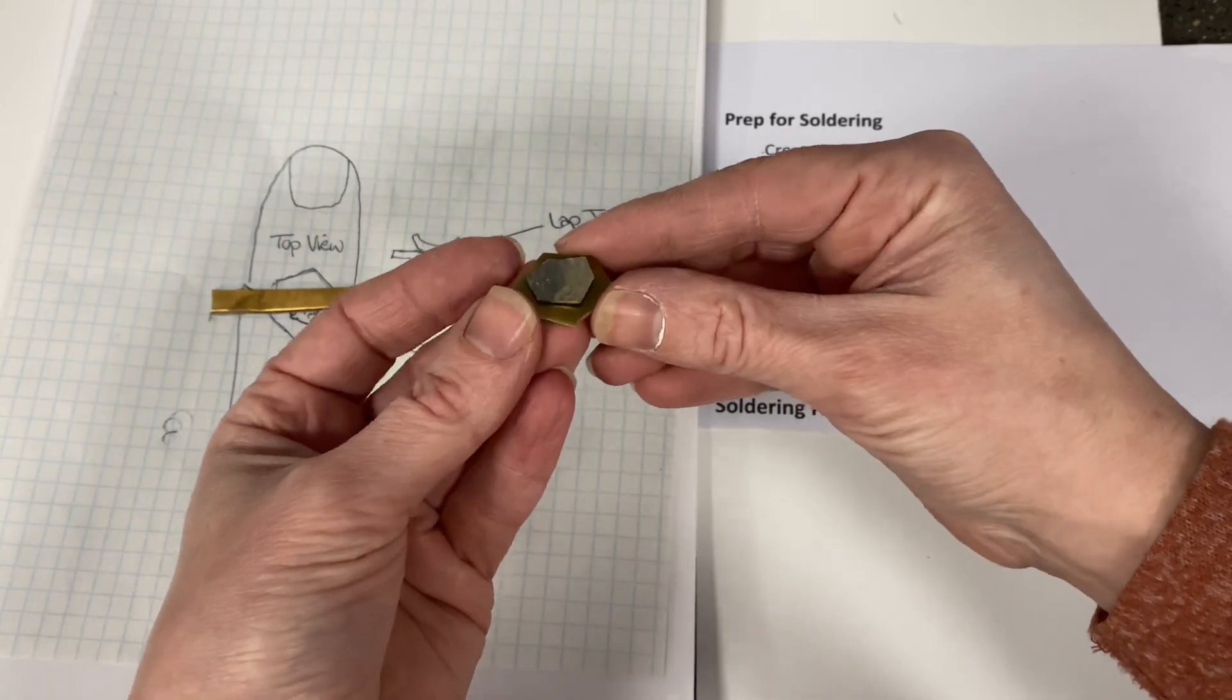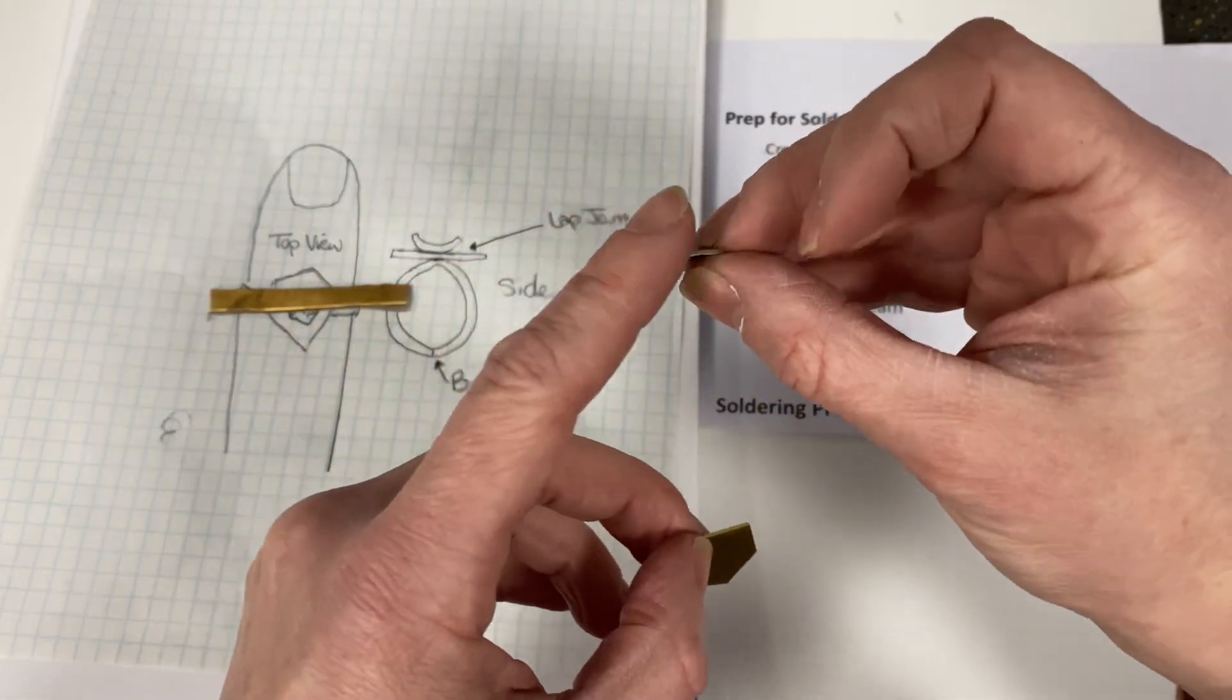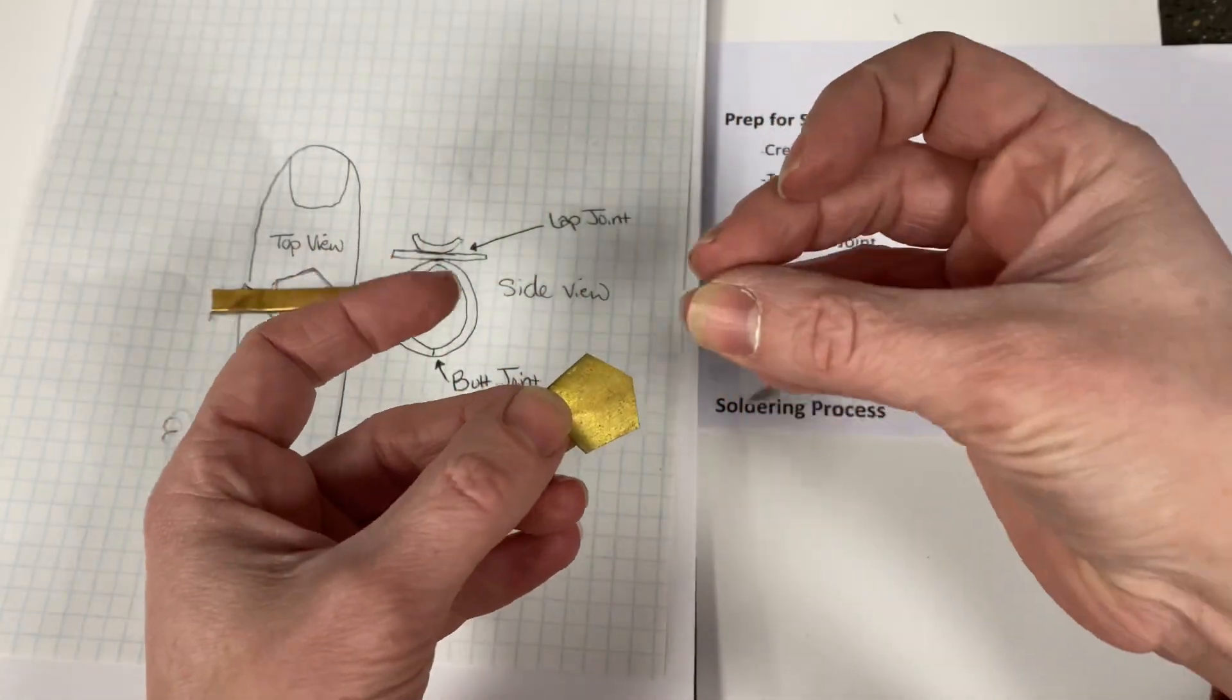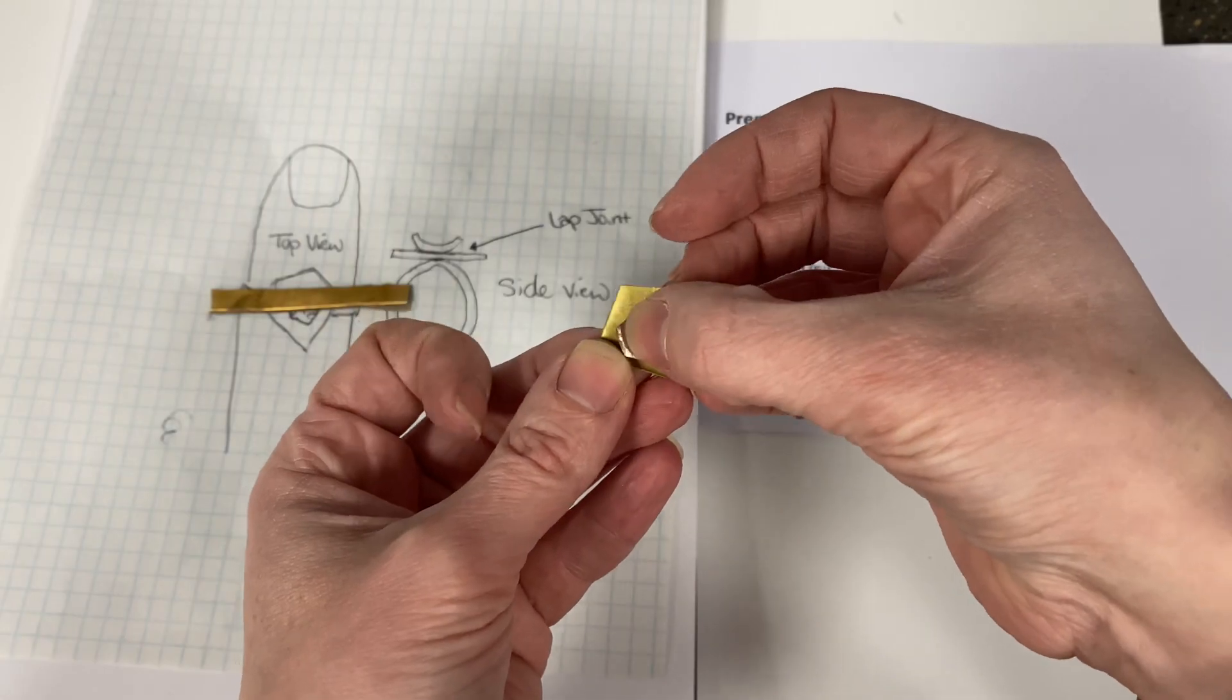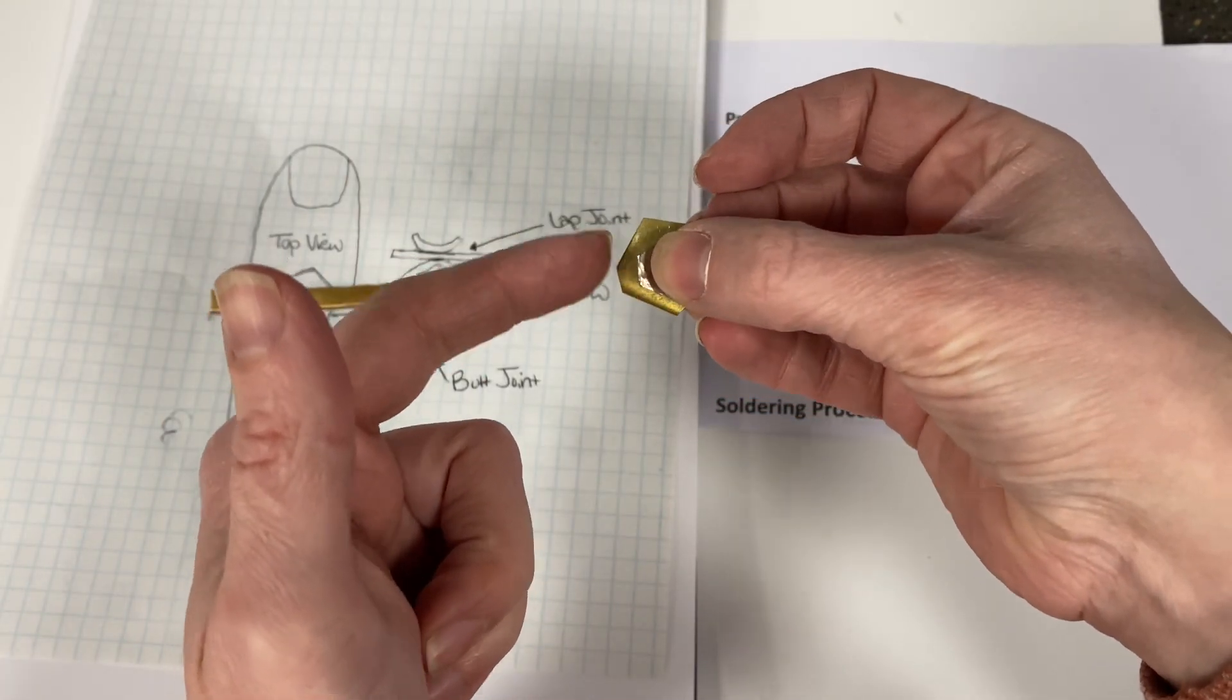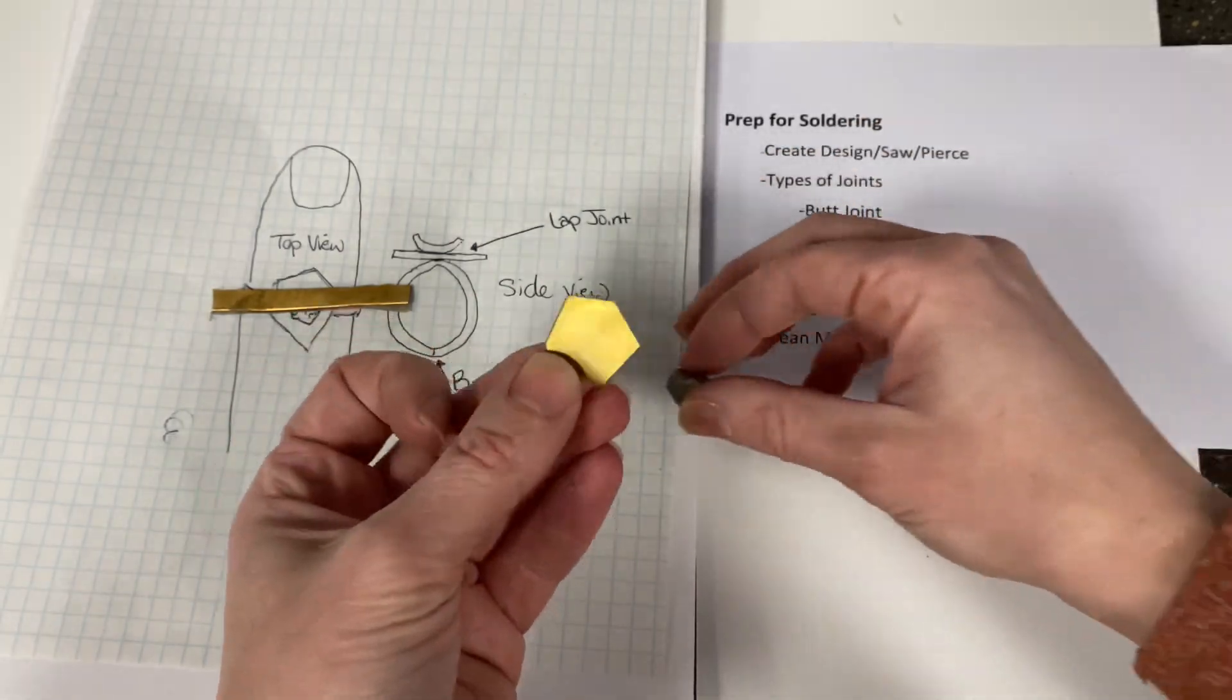What I mean is once I solder these two pieces together, I'm not really easily going to be able to sand and clean up these edges. In the same way, once I solder these two pieces together, I won't be able to sand or file around the shape. So what you want to do is you want to get them pretty well ready.